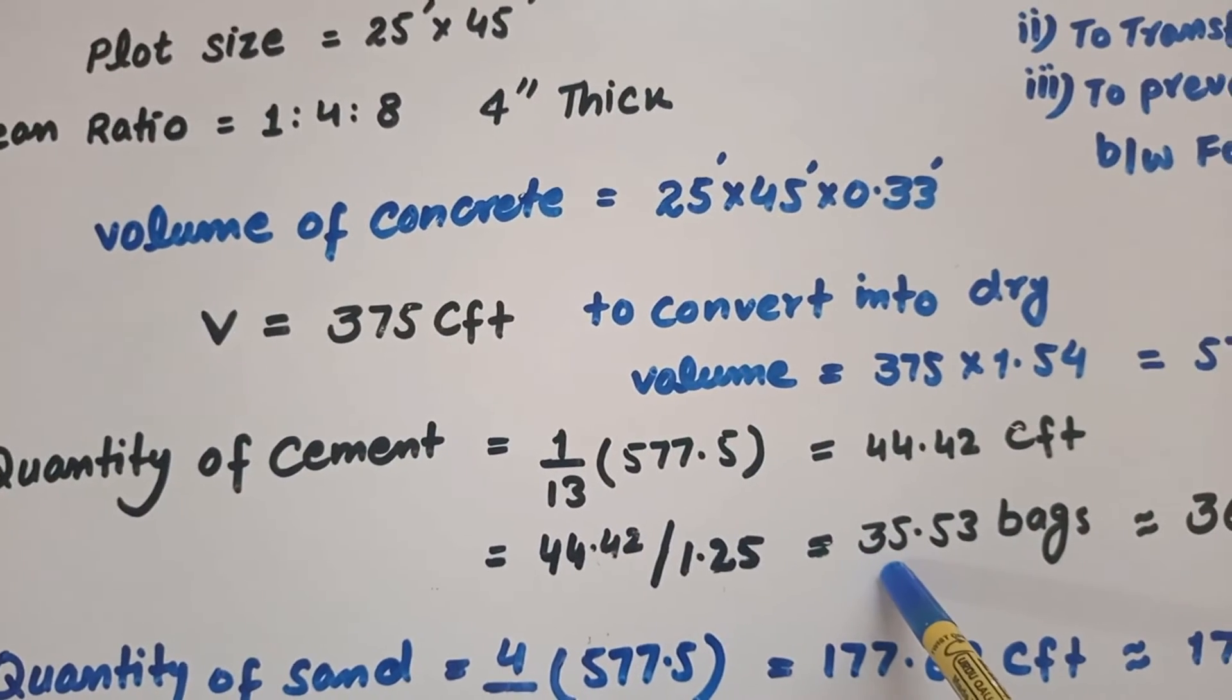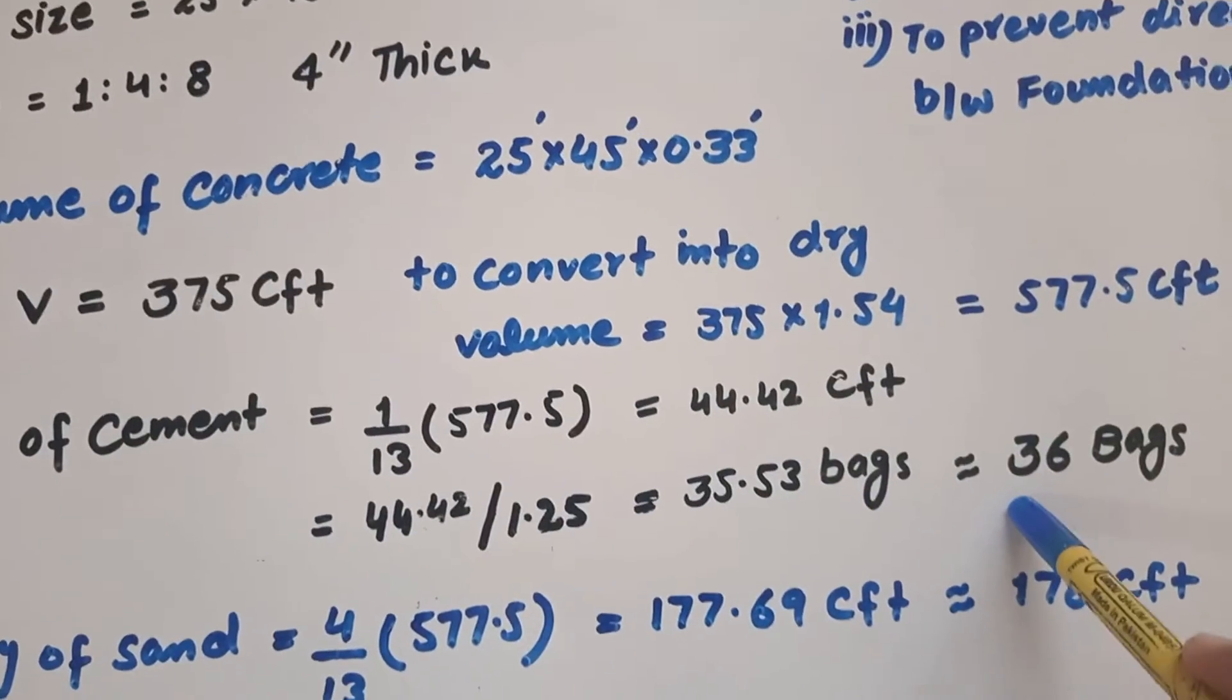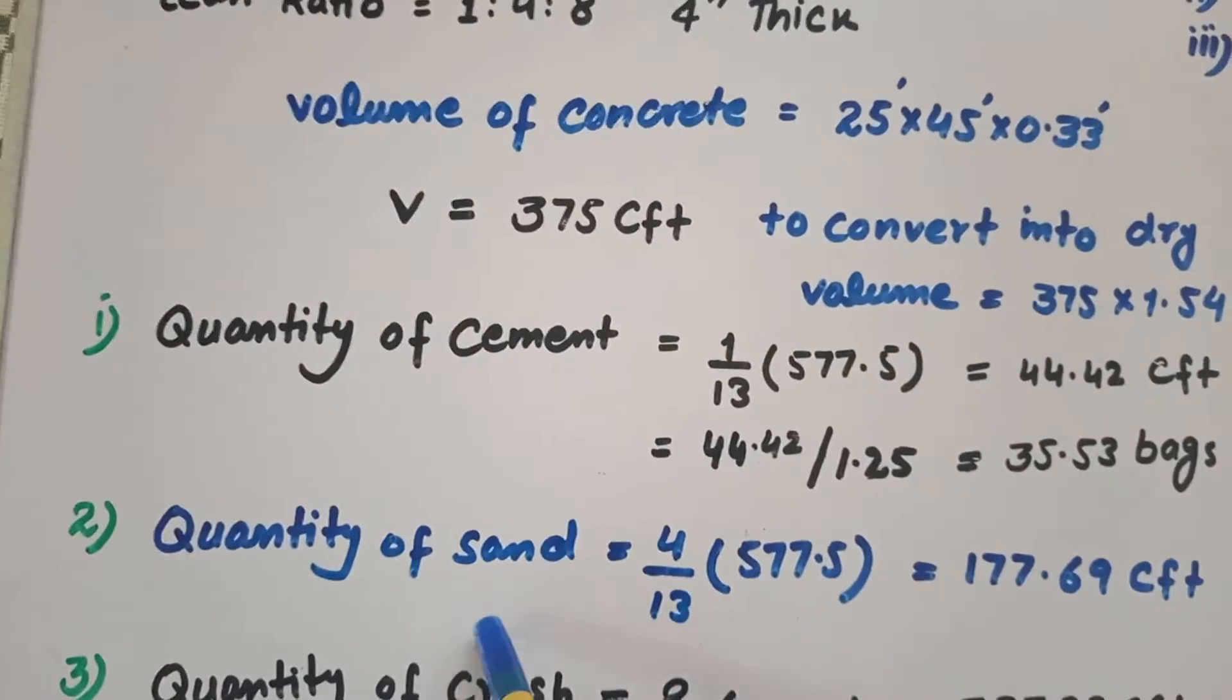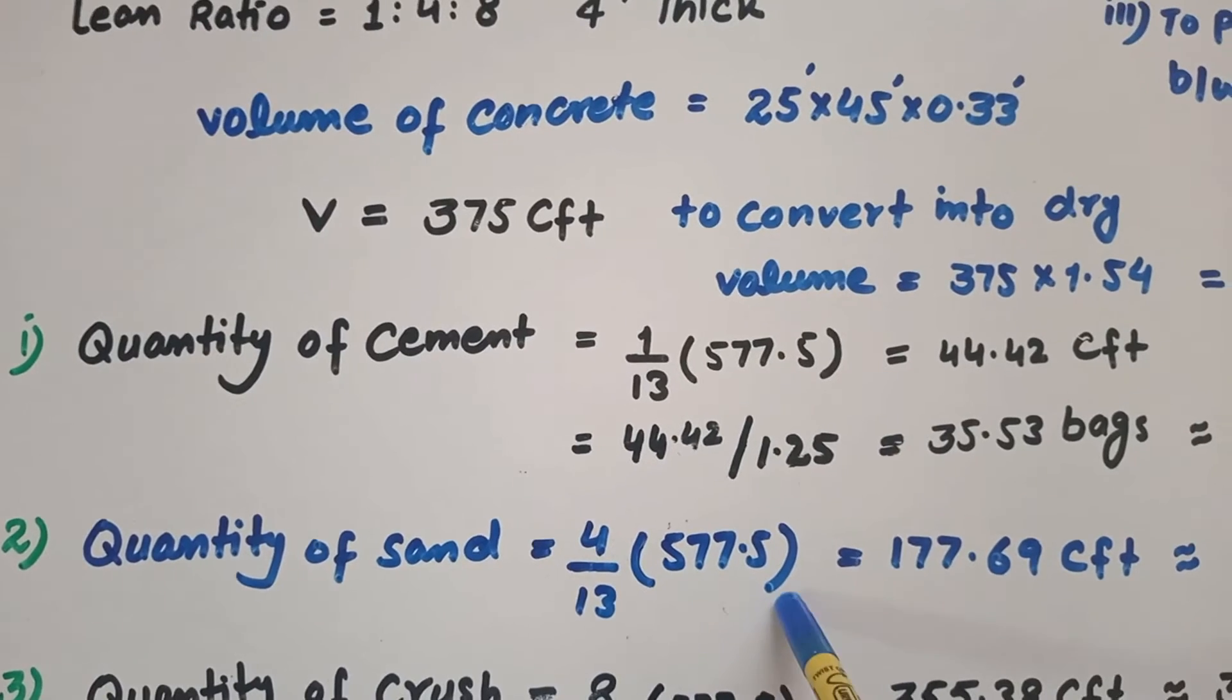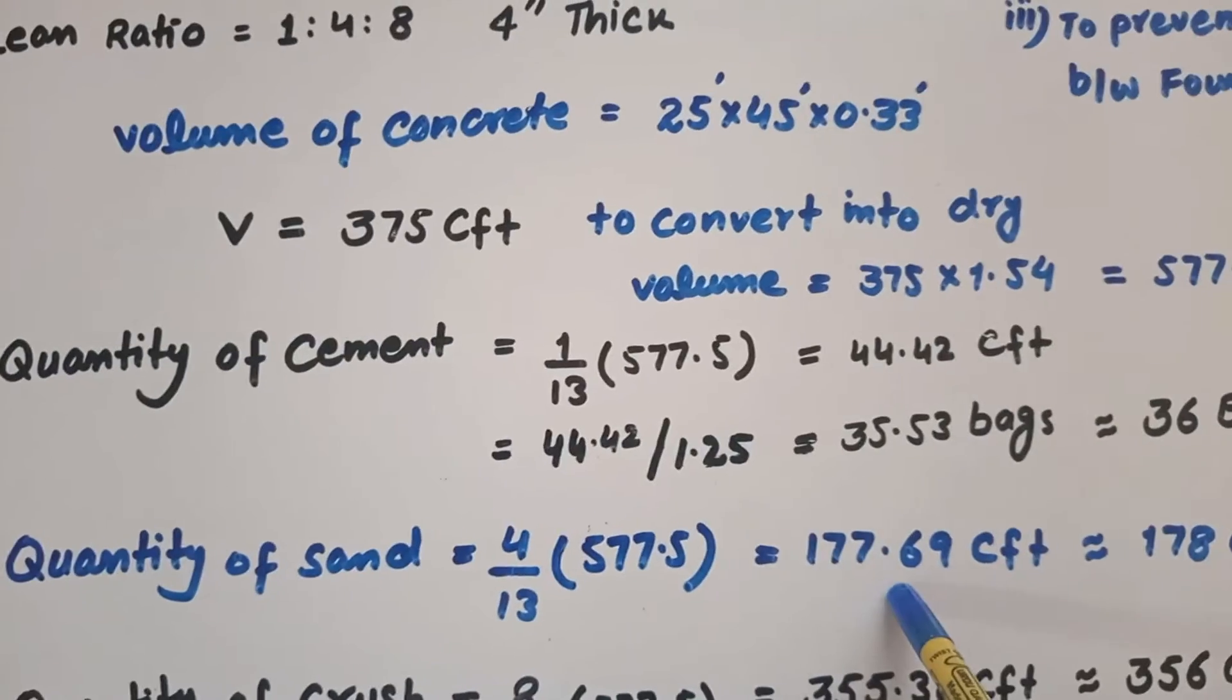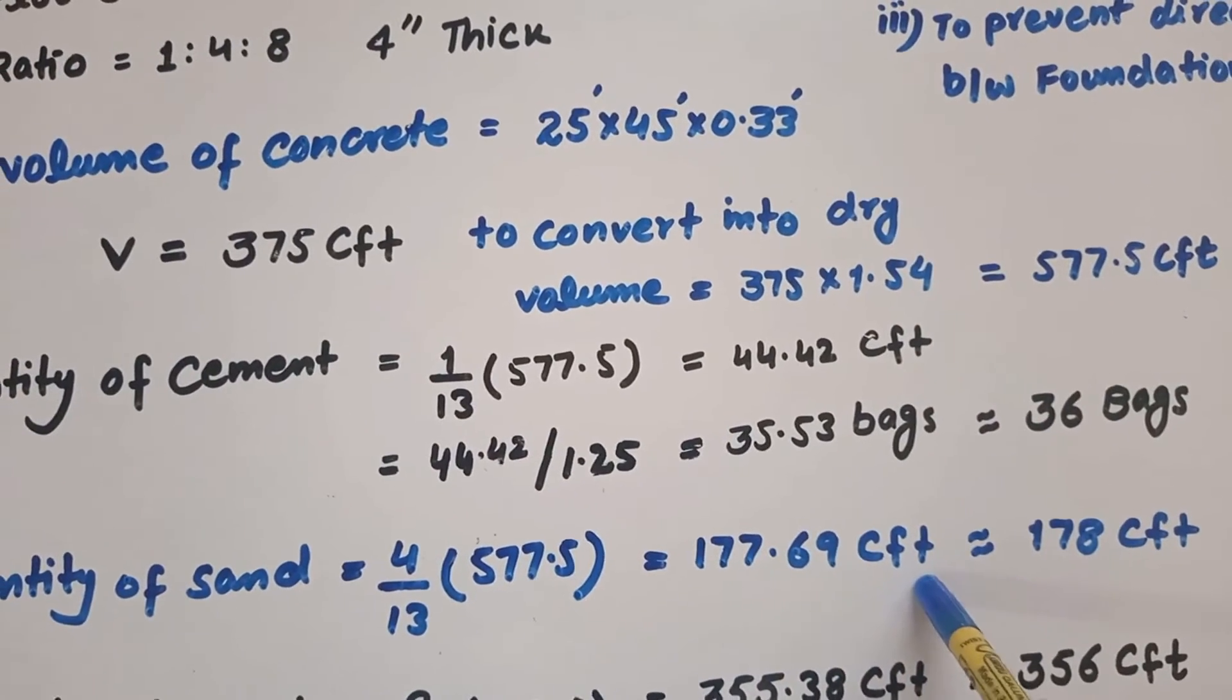Number two, quantity of sand: 4/13 × 577.5 = 177.69 cubic feet, which is equal to 178 cubic feet.